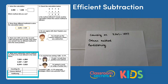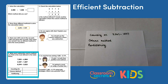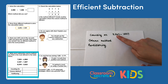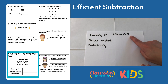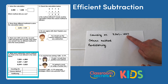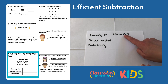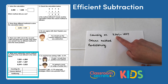Question four: write each subtraction next to the method you think is most efficient in the table. I've already completed the first one: for counting on, I'd choose 2,347 subtract 1,847, because the tens and ones remain the same in both numbers, so I can easily count on from 1,847 up to 2,347.